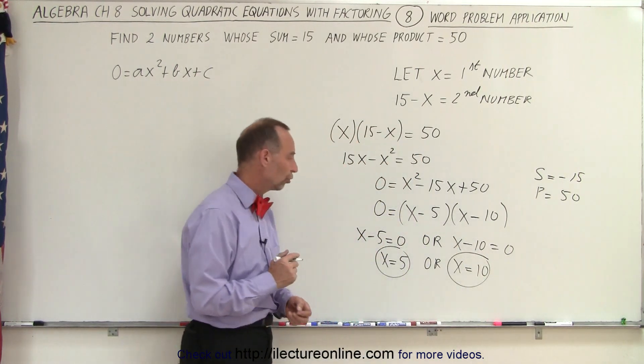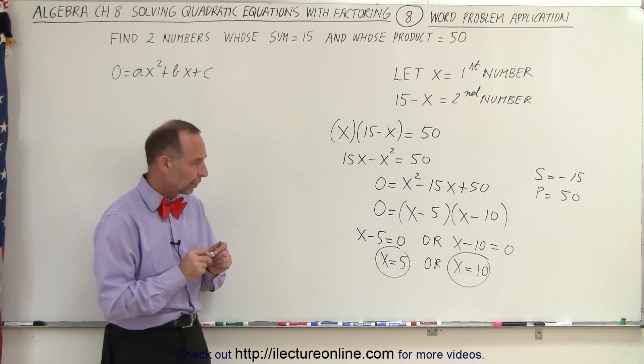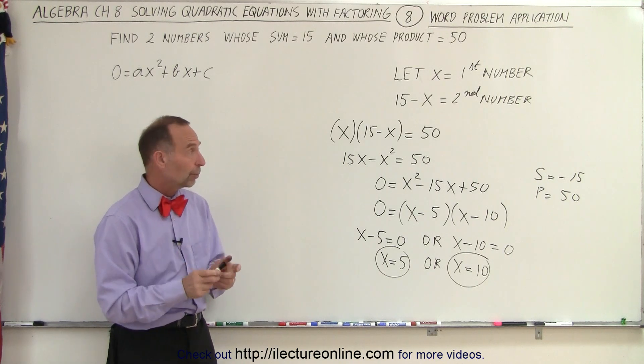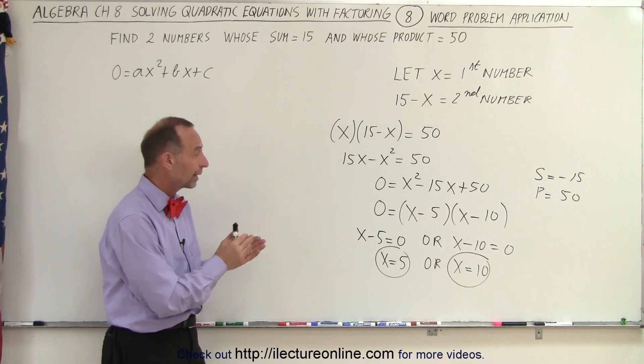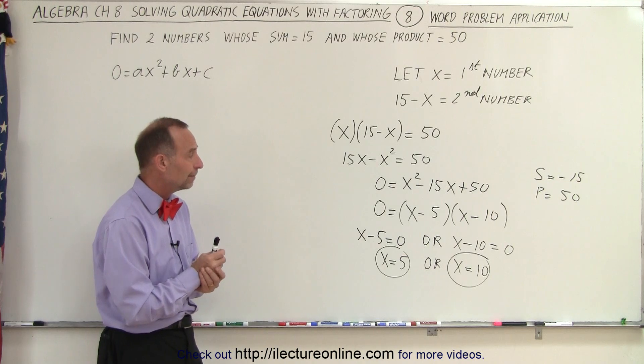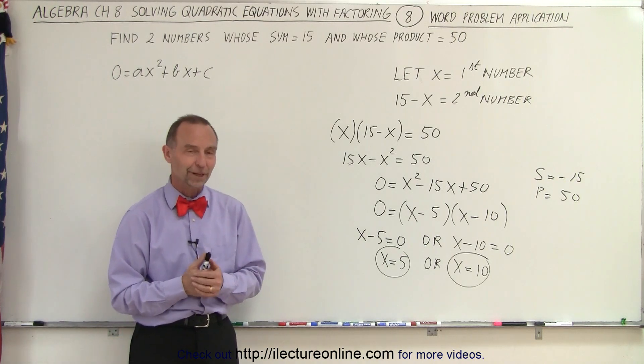In this case, those are the two solutions we're looking for. One number is 5, the other number is 10. When I multiply I get 50. When I add I get 15. And that is how it's done.